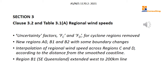A significant change for cyclonic regions C and D is that you can now interpolate the regional wind speed depending on the distance of your site from the smooth coastline. Right on the coast in Region C, you get the full wind speed from the table, but as you move further inland it reduces and approaches the Region B2 wind speed. At 49 kilometres from the coast, your regional wind speed will be close to the Region B2 value. This reflects the well-known weakening of tropical cyclones after they cross the coastline and lose their energy from the warm ocean.